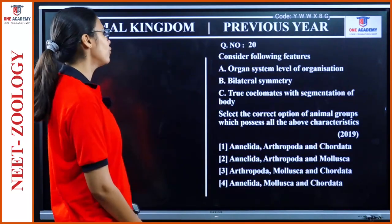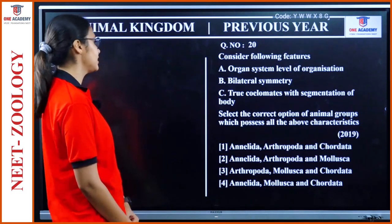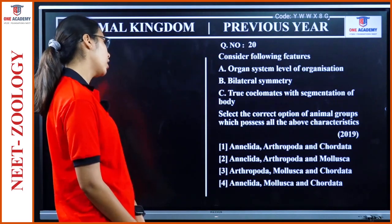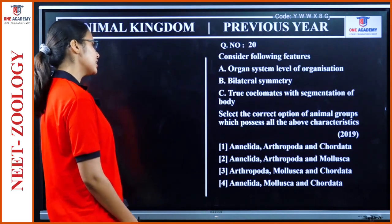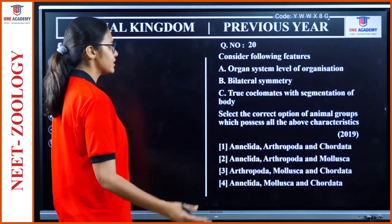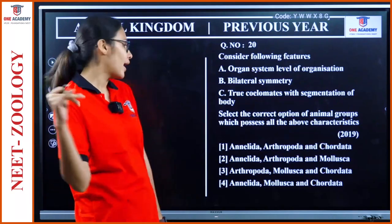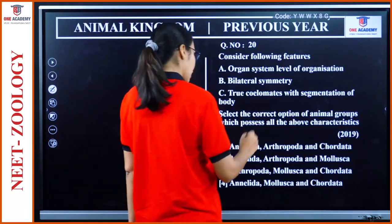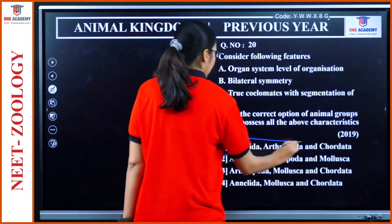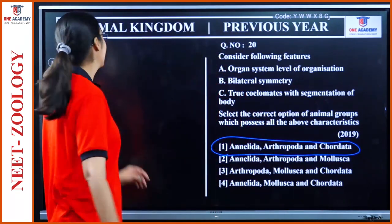Question 20: Consider the features — organ system level of organization, bilateral symmetry, true coelom, segmentation of body — all these belong to which animal groups? The answer is Annelida, Arthropoda, and Chordata.